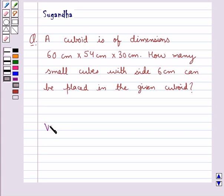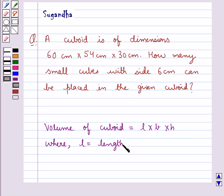We know that the volume of cuboid is equal to l × b × h, where l is the length of cuboid, b is the breadth of cuboid, and h is the height of cuboid.